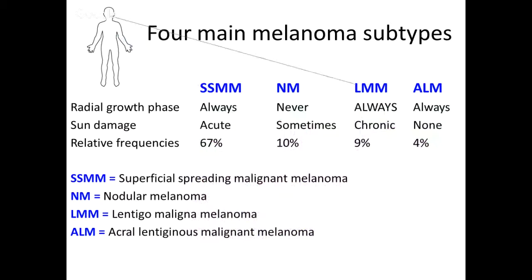Lentigo maligna melanomas have a very prolonged radial growth phase, so a lot of times they can have a very extensive surgical defect by their removal. They tend to have a very prolonged radial growth phase before moving into the vertical growth phase. A lot of times when you catch them, they're not really invasive, or if they are, they're thinly invasive. But obviously not in all cases.